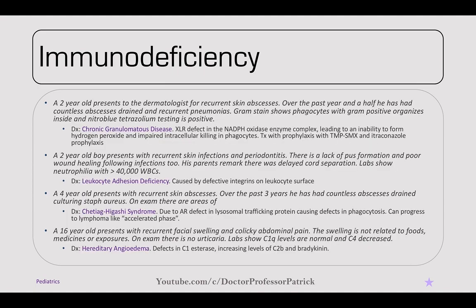A two-year-old presents to the dermatologist for recurrent skin abscesses and pneumonias over the past year and a half. Gram stain shows phagocytes with gram-positive organisms inside, and the nitroblue tetrazolium test is positive. This is chronic granulomatous disease — an X-linked recessive defect in the NADPH oxidase enzyme complex, leading to inability to form hydrogen peroxide and impaired intracellular killing. Treatment is prophylaxis with TMP-SMX and itraconazole to prevent catalase-producing organisms.